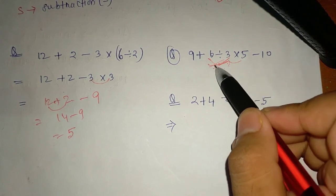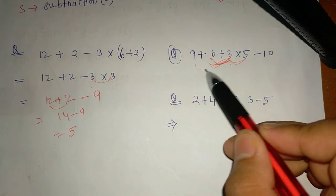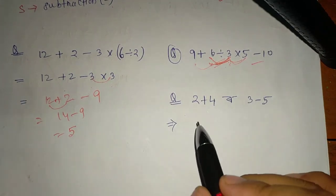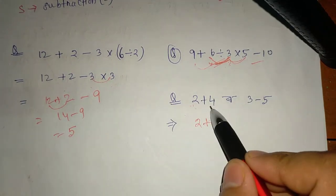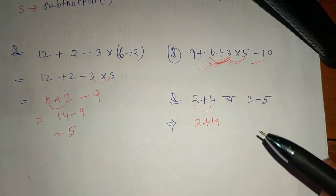First, solve what comes first in the order. If there's no bracket, apply of first. Next, you can directly write 2 plus 4 is equal to 6.